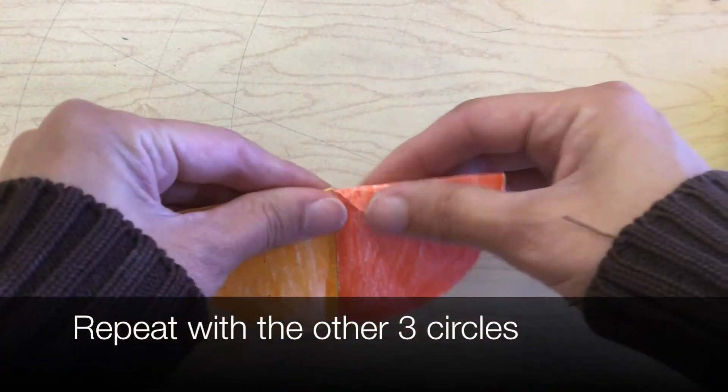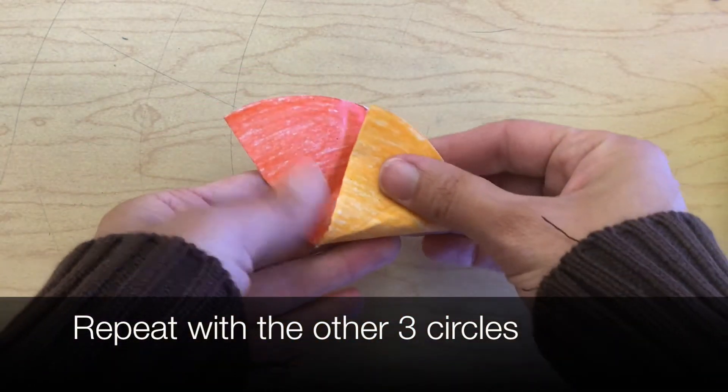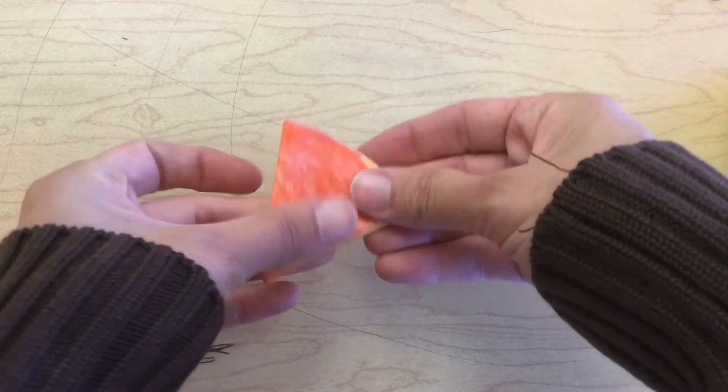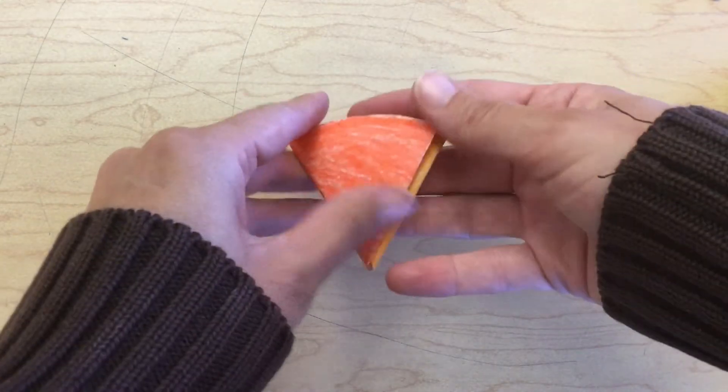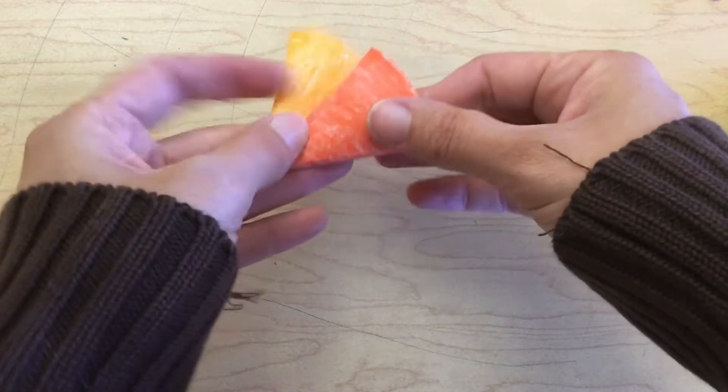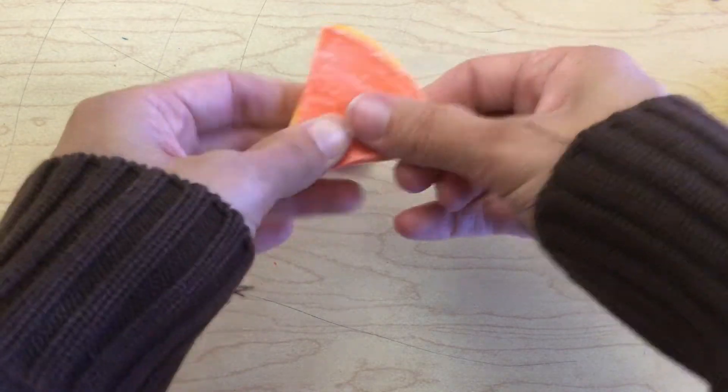Once you know what to do, repeat the process with all of your circles so that you have four hourglass-shaped circles that are pinned with a paper clip.